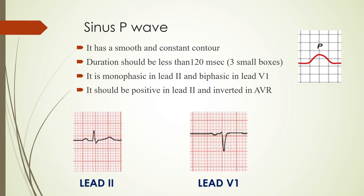For a sinus P wave, in limb lead 2 it has to be monophasic — meaning it shows one phase, whether upright or downward. In lead 2, a sinus P wave should be positive, as seen here — a monophasic upright or positive P wave. In lead V1, it is biphasic, meaning it has a positive component followed by a negative component. So in V1, a sinus P wave is mostly and usually biphasic.